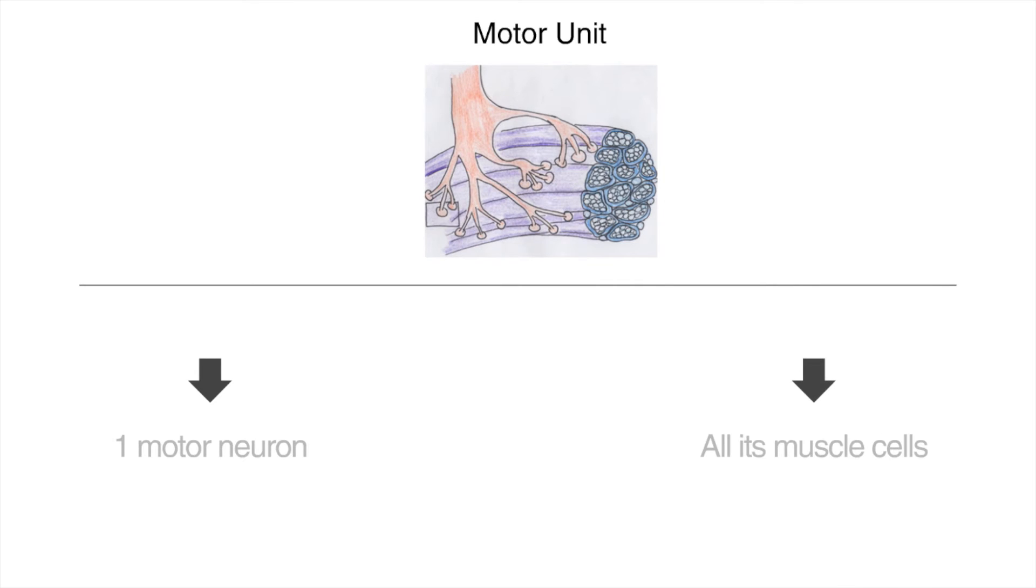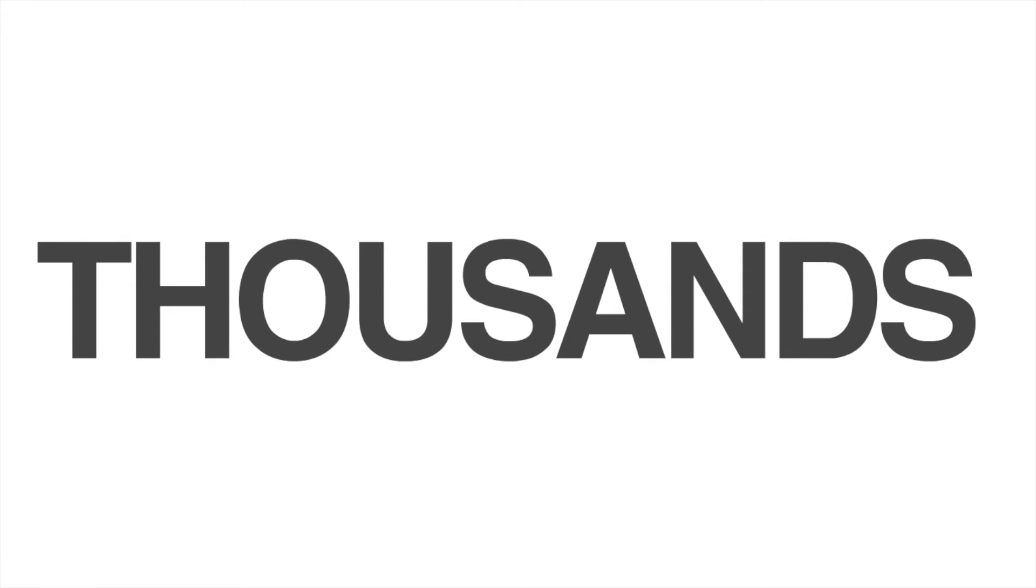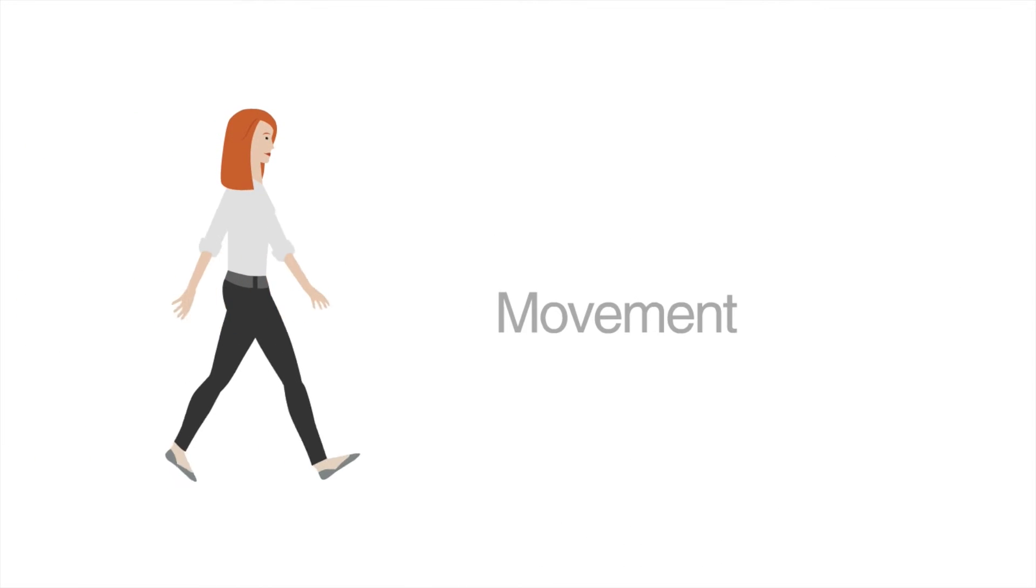A single motor neuron and all the muscle cells it controls is called a motor unit. Just one motor unit can consist of thousands of muscle cells. Together, motor units can work to help us carry out smooth, coordinated movements, like walking across a room or raising our hand.